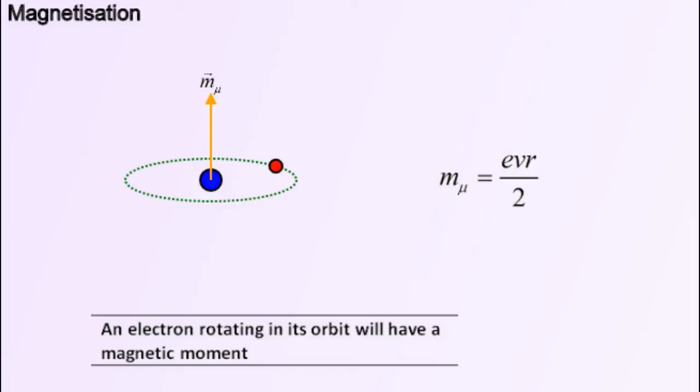In this case, if we look from the top, then the movement of the electron is in the clockwise direction, which is equivalent to a positive charge moving in the anticlockwise direction. Then, from the right-hand rule, we have the magnetic moment pointing upwards.